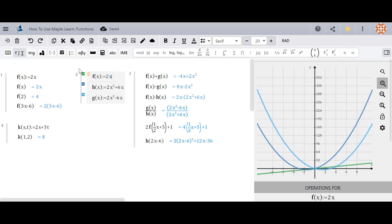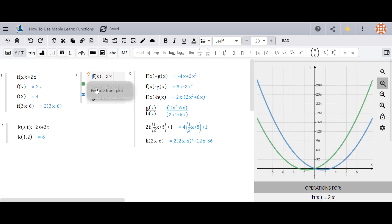You can exclude functions from the plot by clicking on the lightbulb that appears on the left side of a cell and choose exclude from plot. To bring back an excluded function, go to the lightbulb menu and click include in plot.